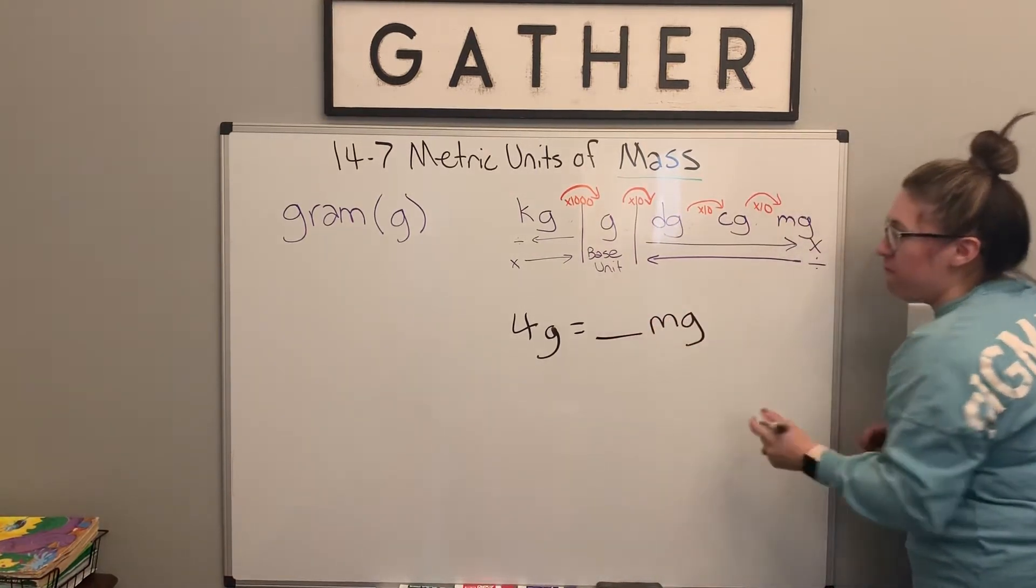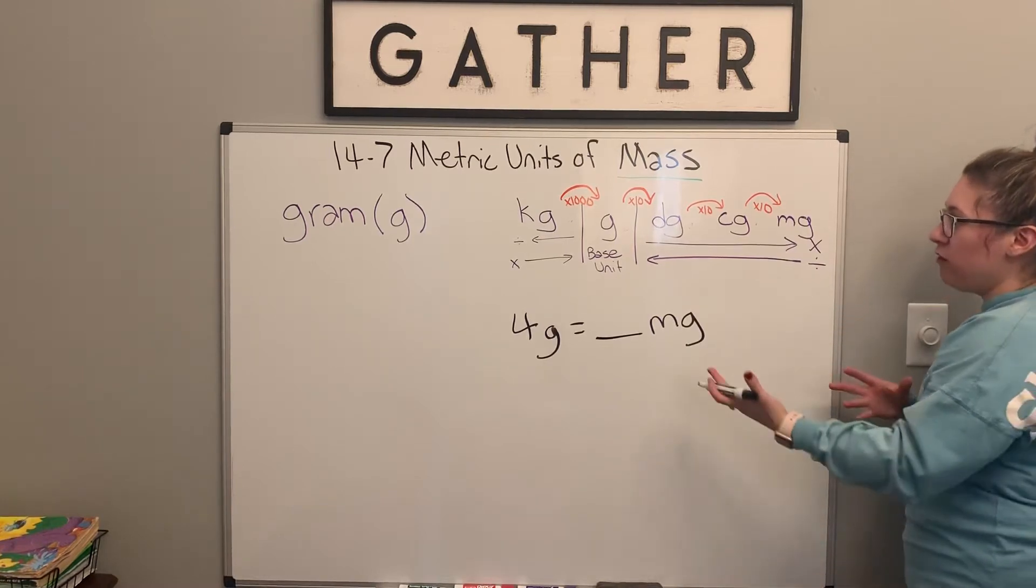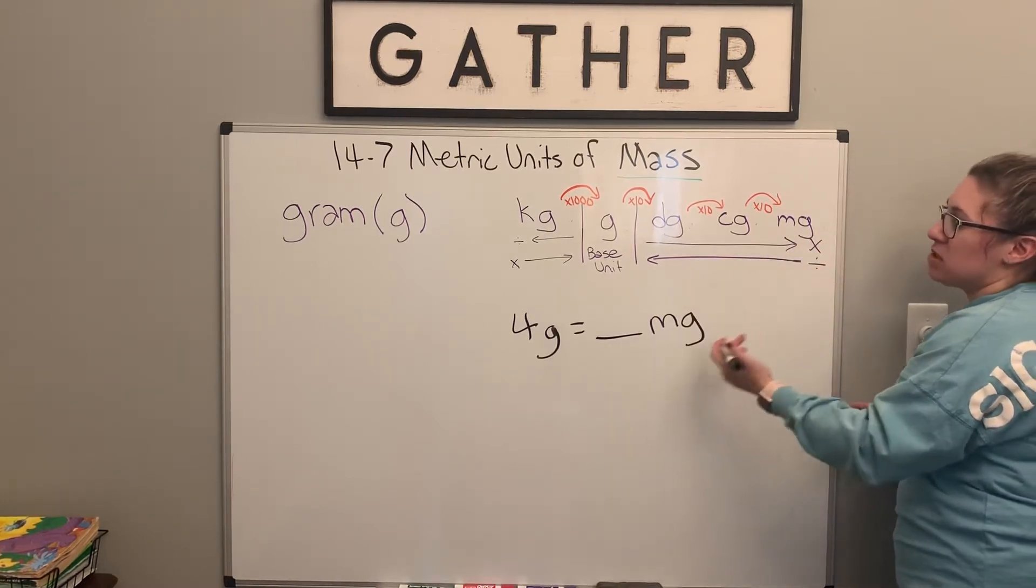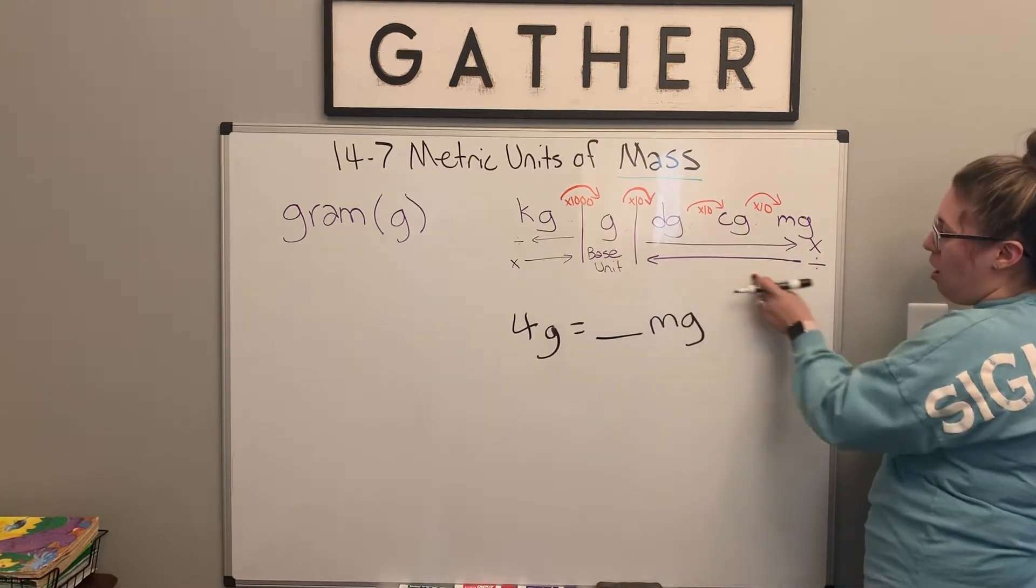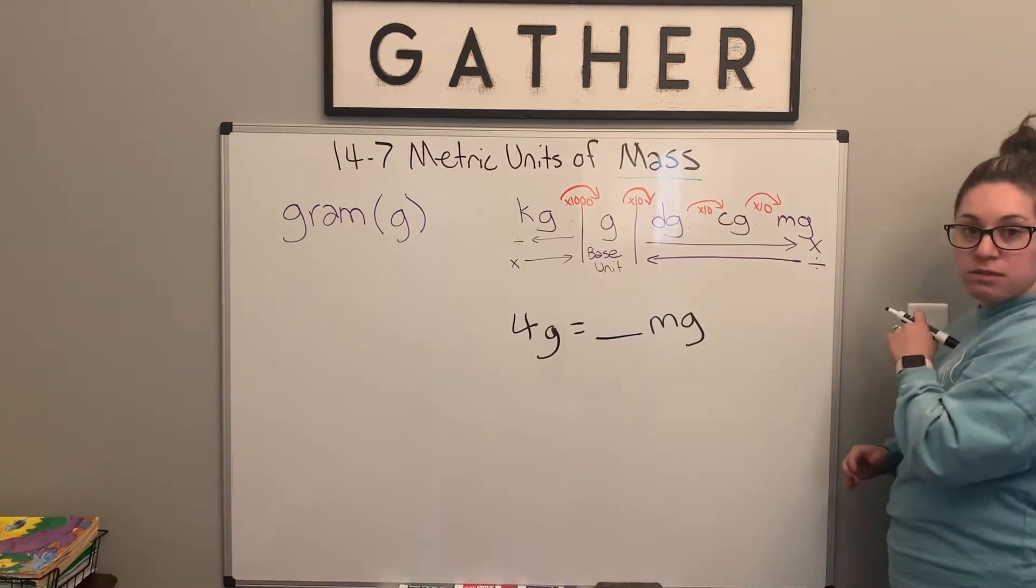And we want to make it into a milligram. So we have four grams of something. And now we want to figure out how many milligrams that is. So if we're going from our base unit all the way over to a smallest unit, we want to multiply.